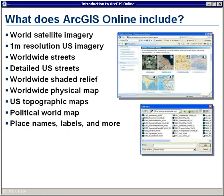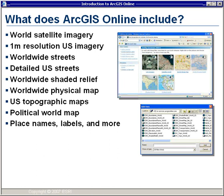ArcGIS Online includes many terabytes of information, including world satellite imagery, one-meter resolution imagery for the United States, worldwide streets with more detailed streets in the United States and North America, shaded relief maps, physical maps, topographic maps, and much more.